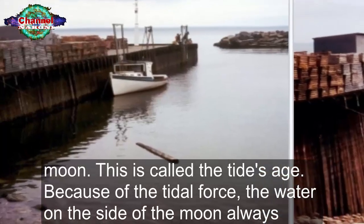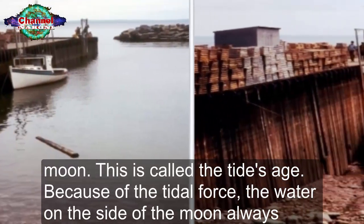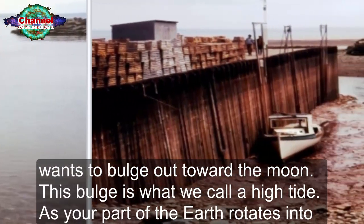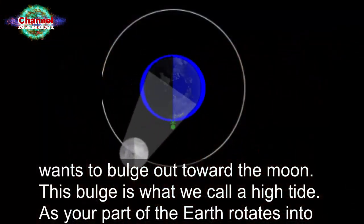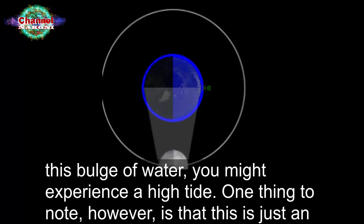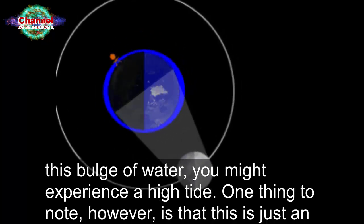Because of the tidal force, the water on the side of the moon always wants to bulge out toward the moon. This bulge is what we call a high tide. As your part of the earth rotates into this bulge of water, you might experience a high tide.